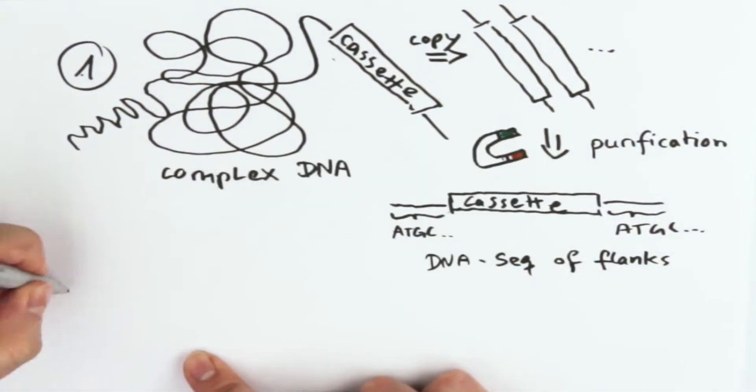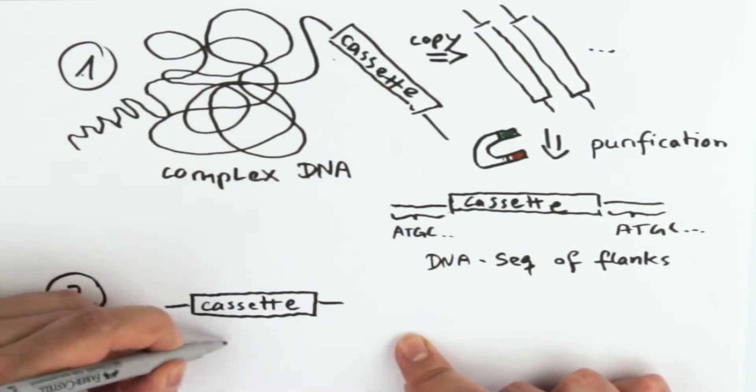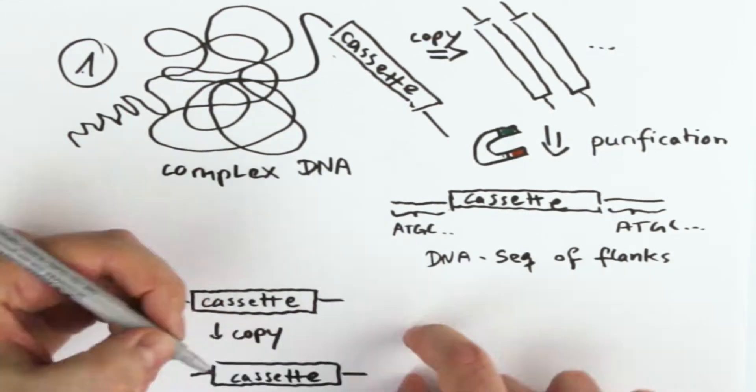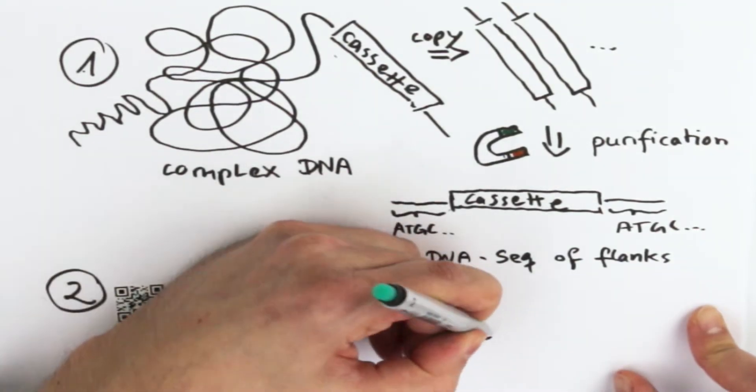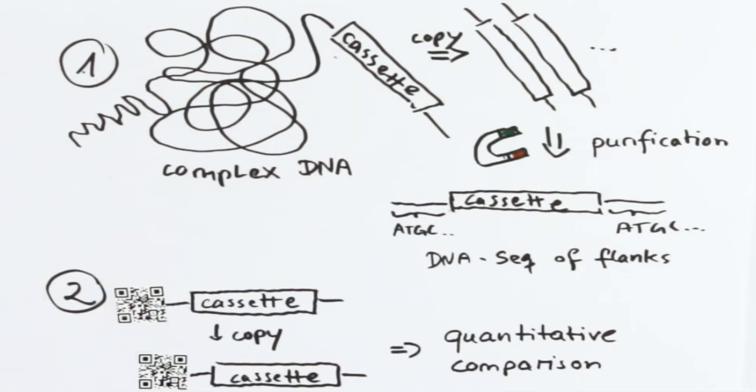Second, the technology uses a special barcode that ensures that all copies of one initial sequence contain the same barcode. This allows for an accurate and quantitative comparison of the DNA sequences in the end.